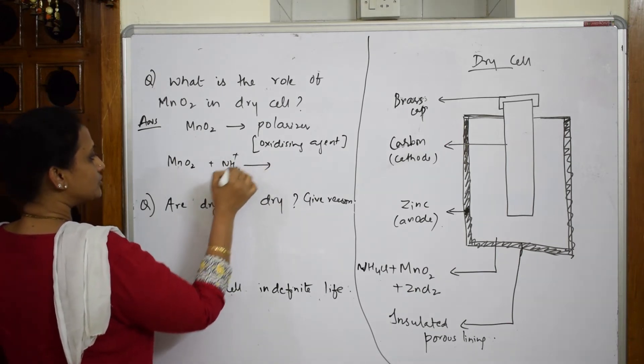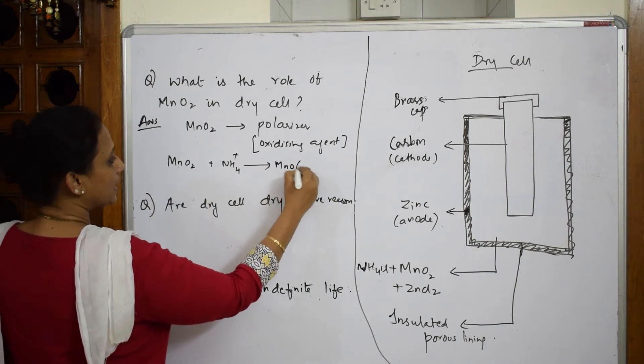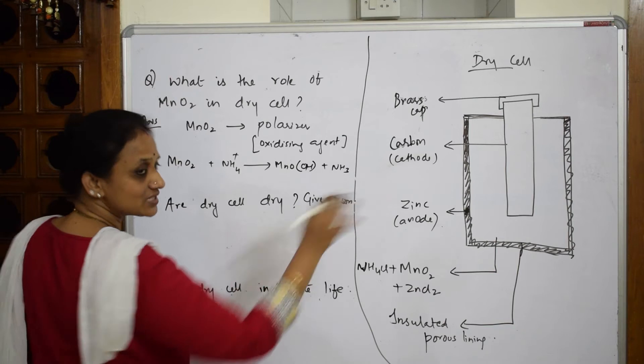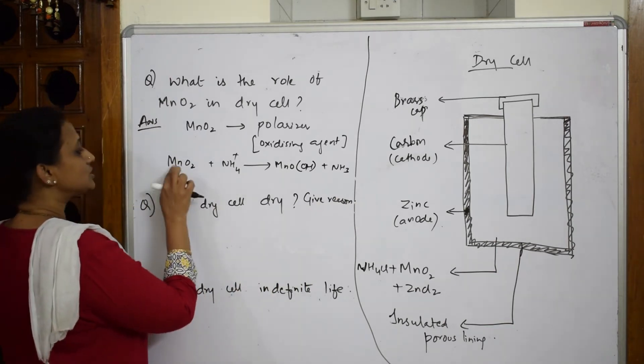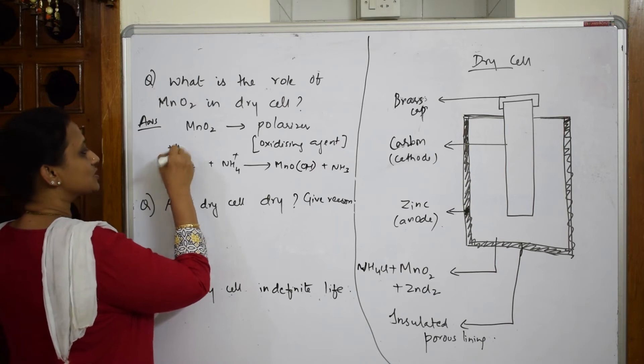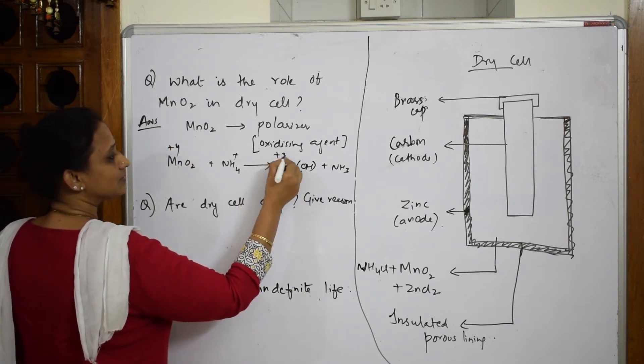And how can I say this? Here what happened in the reaction: MnO2 after combining with ammonia, it has formed a complex like this: MnO(OH) and ammonia. This combined with zinc. Now here the oxidation state of manganese in MnO2 is plus four. Two oxygen is minus two times two, so this is plus four.